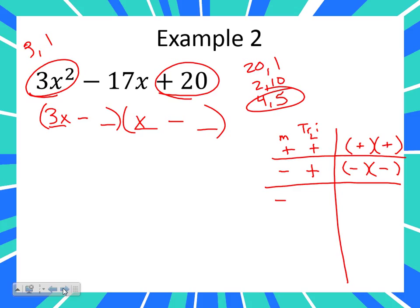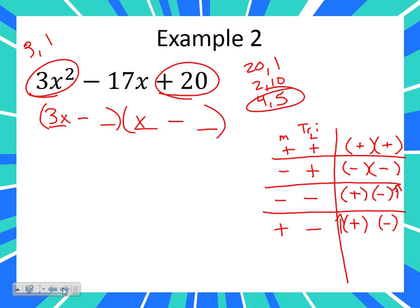What if we have a negative middle and a negative at the end? What multiplies to be a negative? A positive and a negative. But which sign needs to be bigger? The negative. So I'm going to put a little arrow beside the negative to mean the negative needs to be bigger. And then one more: what if I have a positive middle and a negative end? What multiplies to be a negative at the end? A positive and a negative. But now which sign do you want to be bigger? You want the positive. So I'll put a little arrow by that one.